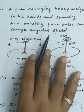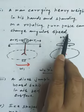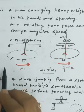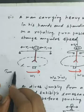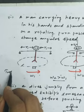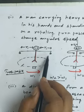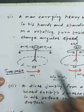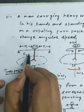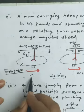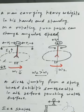The second example: a man carrying heavy weights in his hands and standing on a rotating turntable can change the angular speed by himself. This is the turntable. When the masses in his hands are very far from the axis of rotation, the moment of inertia I₁ has a very high value, so at this time ω₁ has a very small value in order to conserve the angular momentum.